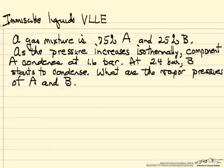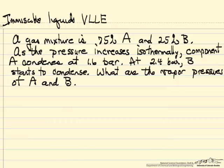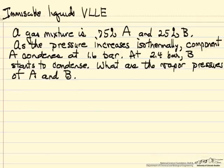The question is: what are the vapor pressures of each of these components? The important thing about vapor-liquid equilibrium with immiscible liquids is that when a liquid is present, it doesn't matter if the other liquid is present, because they're in separate phases — so they each exert their own vapor pressure. If we have liquid A present, it must exert its vapor pressure; if we have liquid B present, it must exert its vapor pressure.